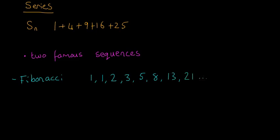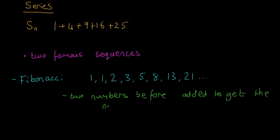So the rule here is two numbers before added to get the next number. The idea is the two numbers before each number, you add those together and you get the next number. So for example, 1 plus 1 is 2.